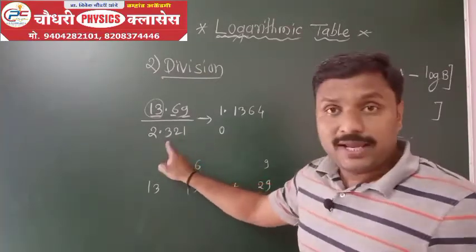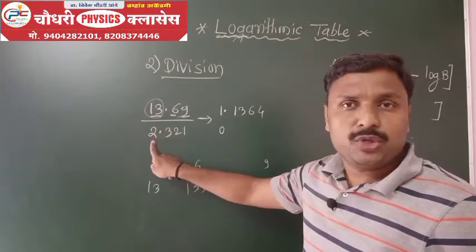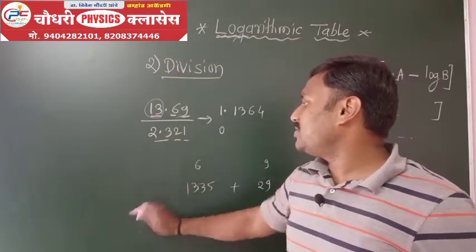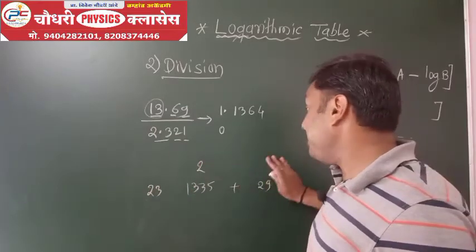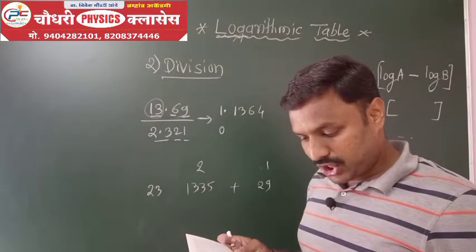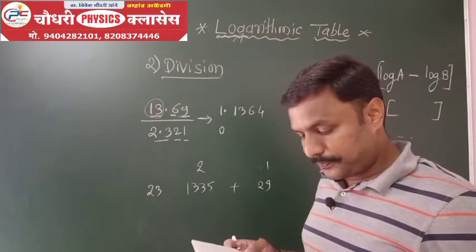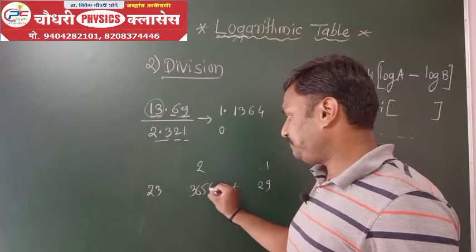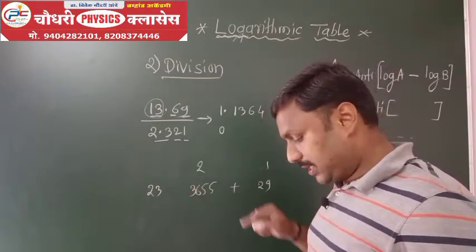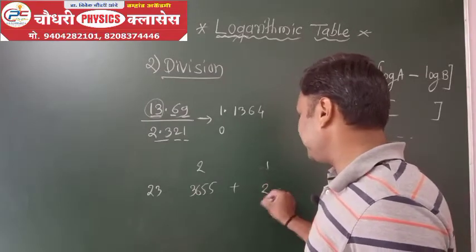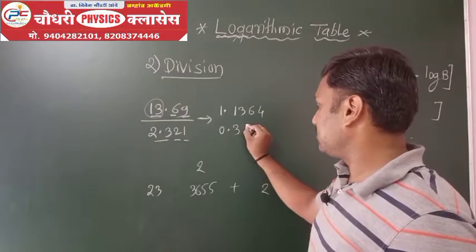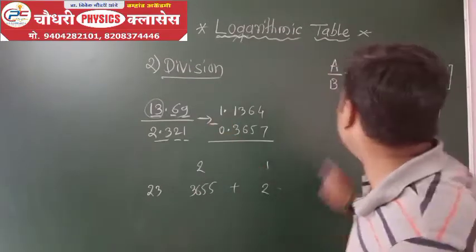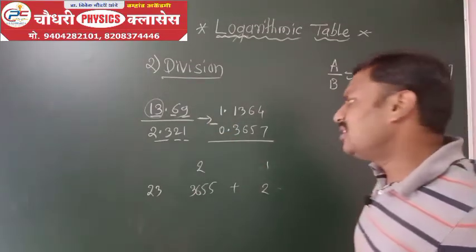Now for the log of the next value: characteristic is clear, the decimal has one digit so we do one minus giving characteristic zero. The mantissa — we look up 23 in the row and column 2, getting 36, then check row 23, column 2 with mean difference giving 28. So 55 plus 2 equals 57, giving mantissa 3657.